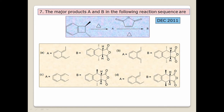For a 4π electron system with a thermal symbol, according to selection rules, thermal conrotation is allowed. The groups at the ring junction are on opposite sides. Conrotation means opposite groups will come to opposite sides. So thermally, conrotation is allowed — opposite groups remain on opposite sides. The first two products are eliminated; B and C are possible.